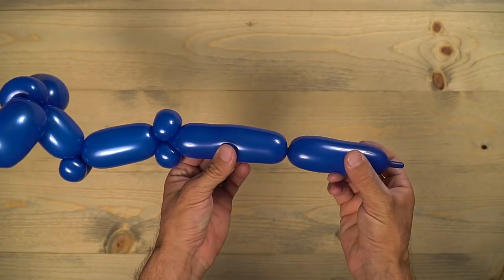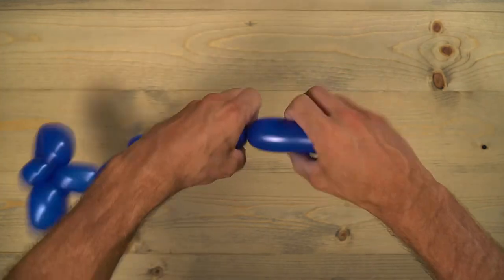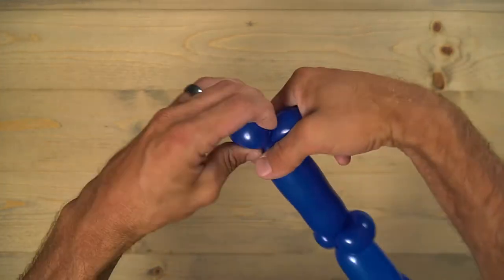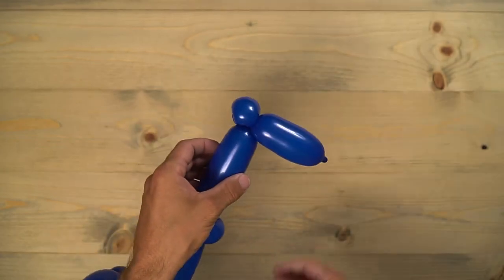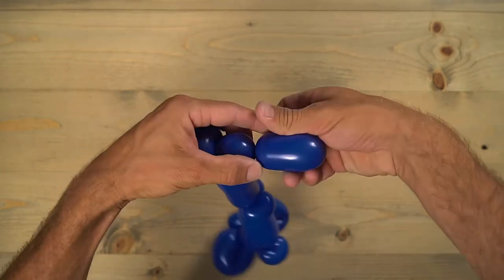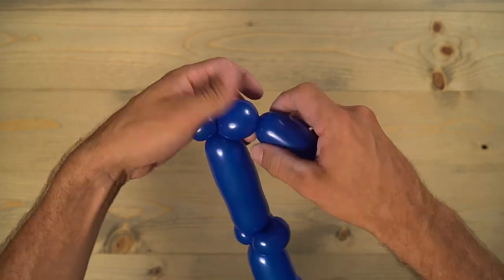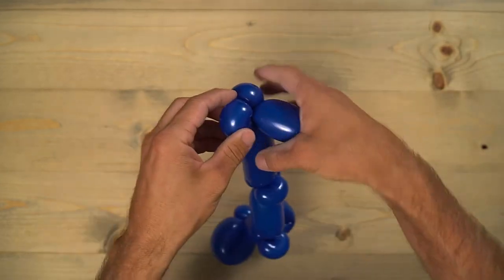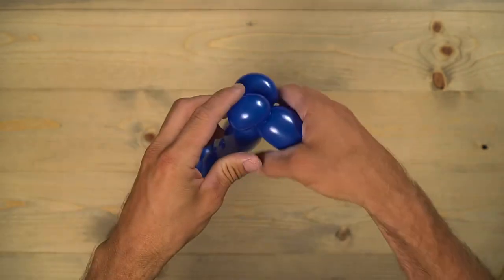Do another one-inch bubble. Pinch twist that. And then do one more right next to it. And you can pinch twist those two all at once. And then bring that front of the airplane up, sticking straight out.